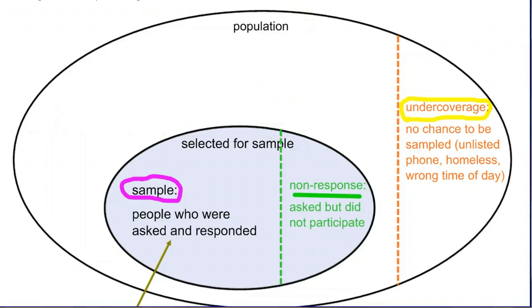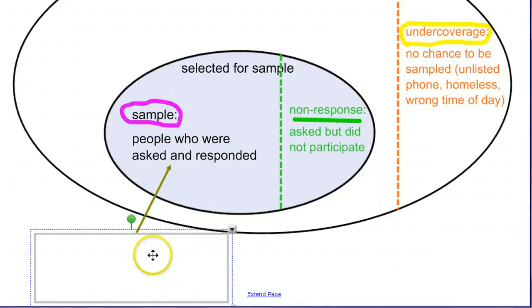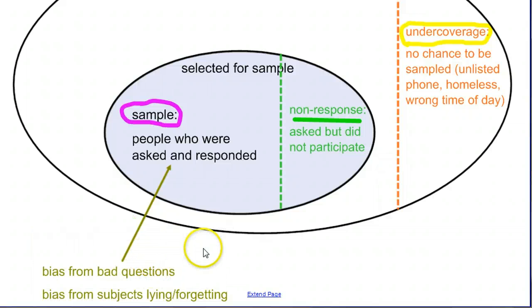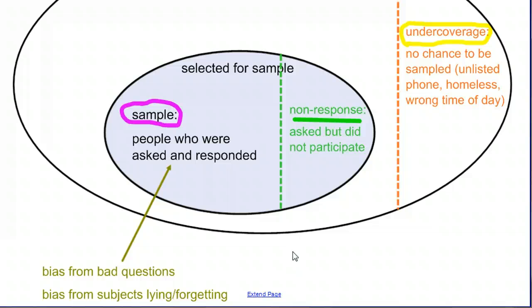But even for those people, we can have problems. When you think about the questions they're asked, if we ask people in our sample — even a very correctly chosen sample — bad questions, how are they going to be able to give us good answers? Or there's bias from lying or forgetting. For example, if we reach people in a well-designed sample and ask them if they've done any illegal drugs in the past year, a lot of them are probably going to say no, regardless of whether they did or didn't. So you have to be careful about people lying or feeling pressured to change their answer.